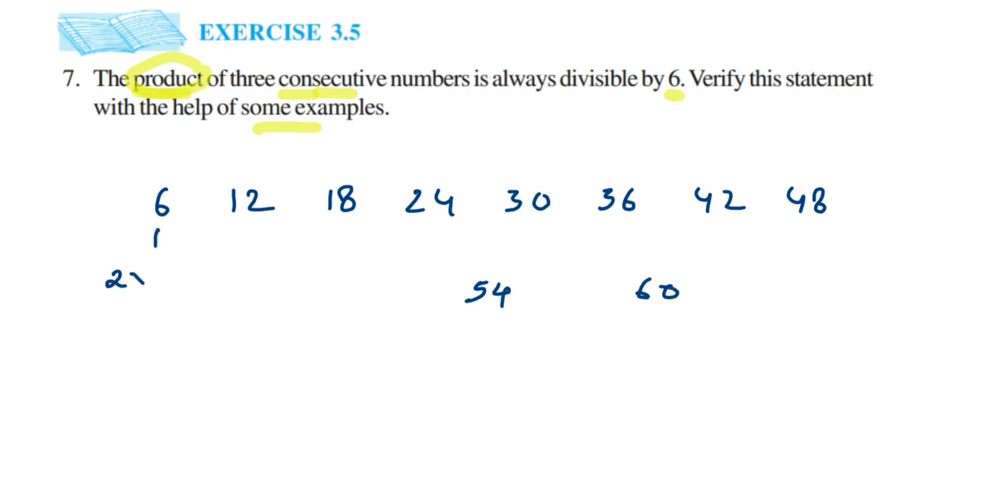Now I want some examples, right? This is what they're asking. So 6 can be expressed as 2 into 3, but we can also write it as 1 into 2 into 3. So 1 into 2 into 3 is 6. You can see 1, 2, 3 are consecutive numbers, and when I'm multiplying I'm getting 6, and 6 is divisible by 6.